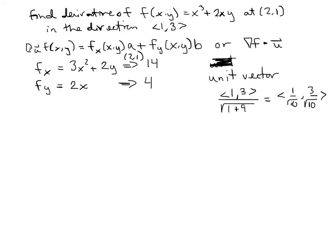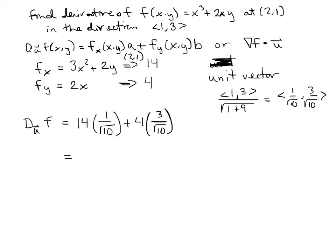Using the first formula: the directional derivative equals the partial of f with respect to x — which is 14 — multiplied by a, the x-component of the unit vector (1/√10), plus the partial with respect to y — which is 4 — multiplied by b, the y-component (3/√10). Adding these with the common denominator gives 14/√10 + 12/√10 = 26/√10.